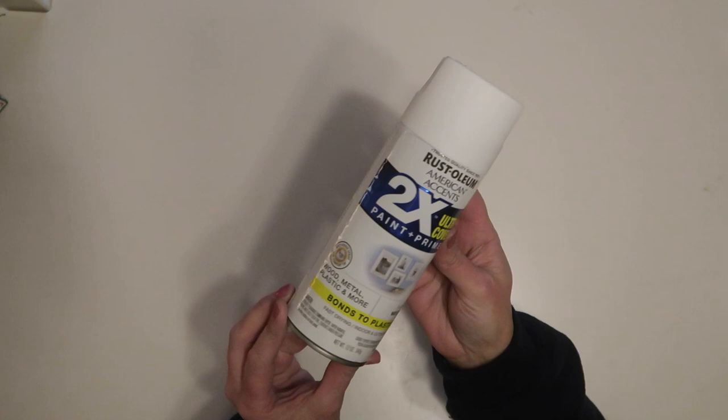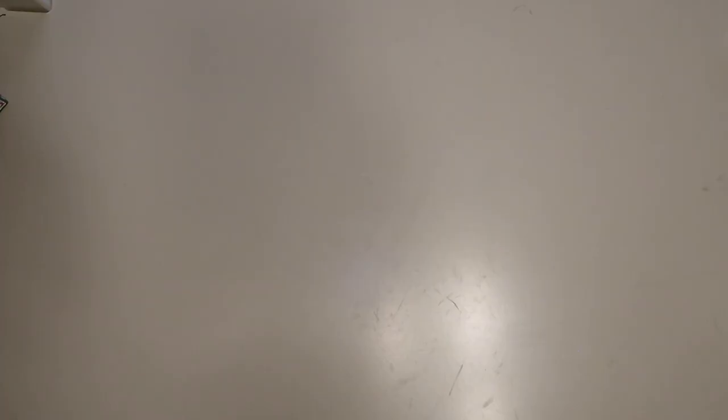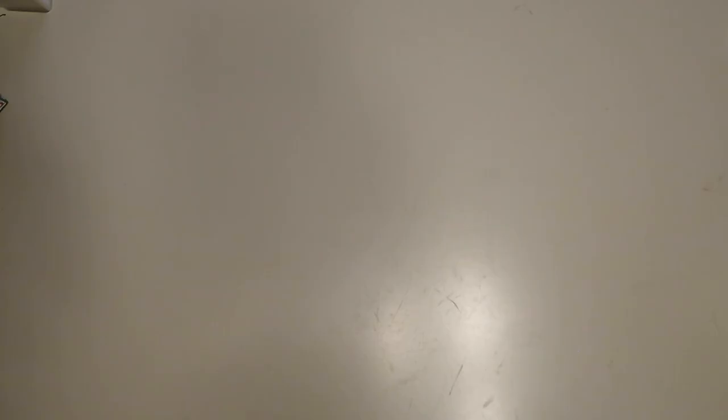I'll be using some white spray paint and I chose this one because it says it bonds to plastic and I think this will work great on those houses. I'm also going to be using some black chalk paint and I'm going to use some E6000 as well as my hot glue gun with some Gorilla Glue sticks.